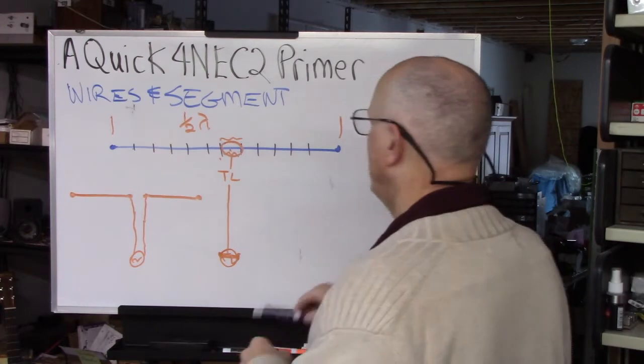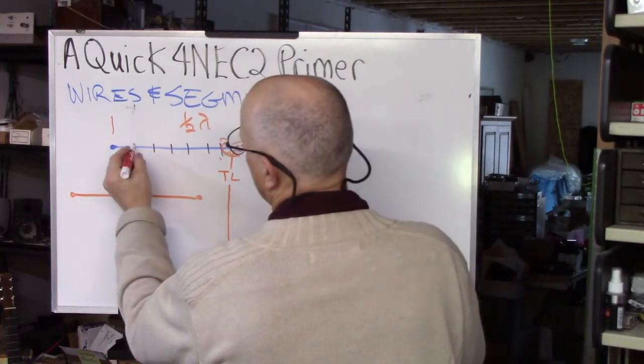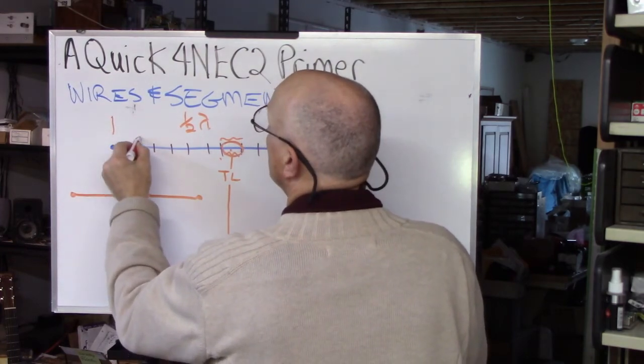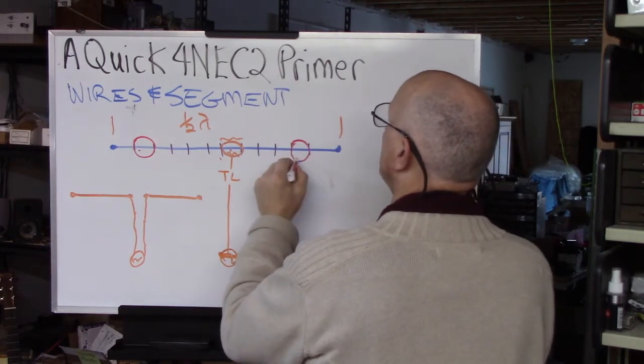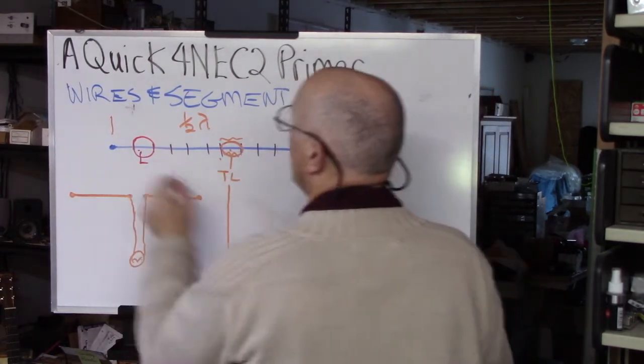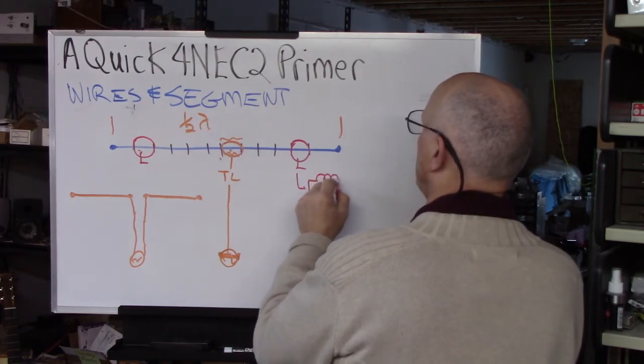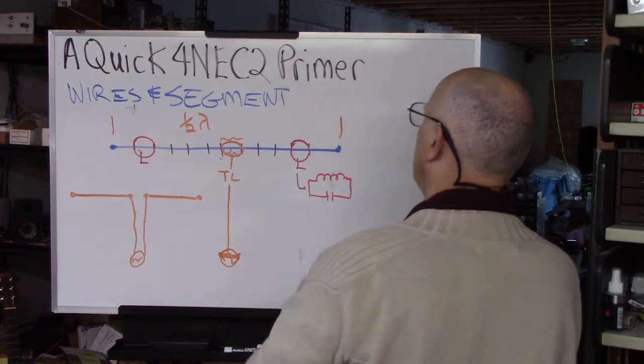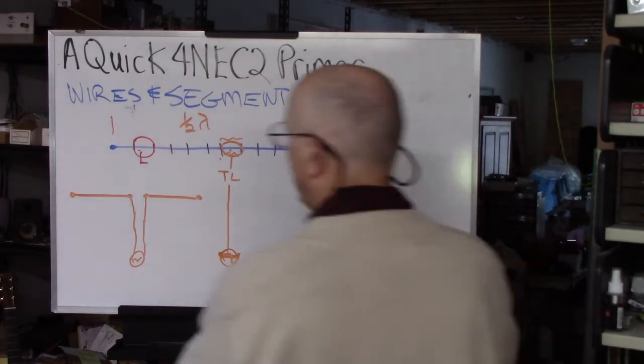Well, what you end up doing then with a trapped antenna is you insert what they call a load at a particular segment and the load consists of, let's say, a parallel, a parallel inductor and capacitor on both sides.